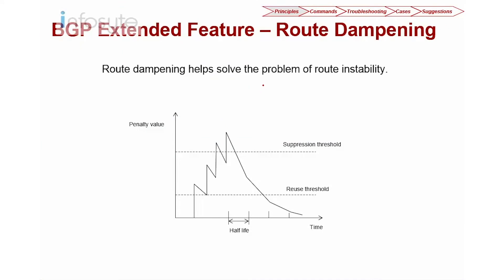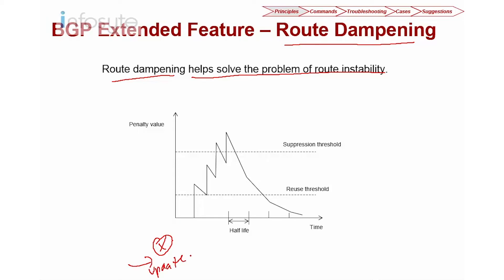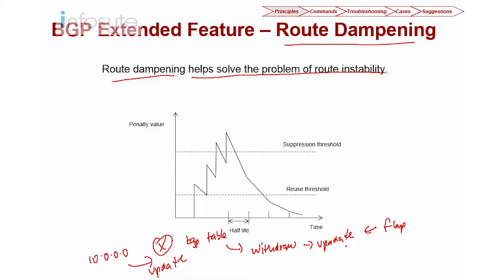To provide stability to BGP, we have a concept called route dampening. Route dampening helps solve the problem of route instability. For example, a router is updated on a specific route — say, an NLRI of 10. This route goes into our BGP table. When this route is later withdrawn due to some problem, and then reintroduced, we call this a flap. Route dampening prevents routes from being introduced and withdrawn multiple times.